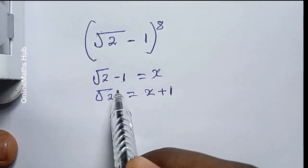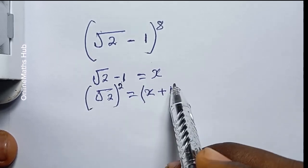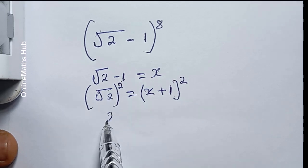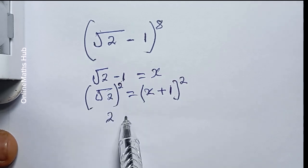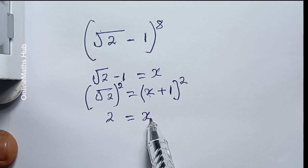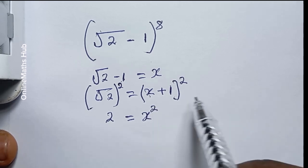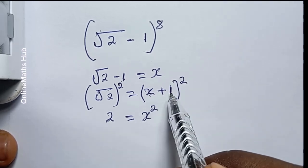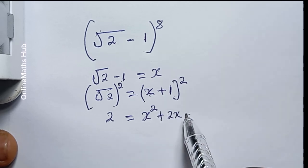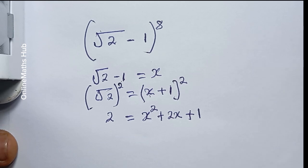Then I will take the square of both sides so that I can remove this square root sign. This gives me 2 equals — expanding the bracket — x squared, then 2 times x times 1 which is plus 2x, and then 1 multiplied by itself which is 1.